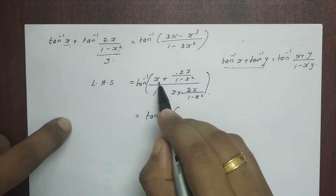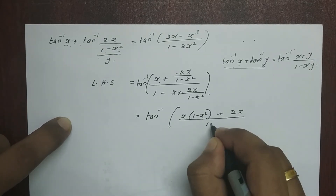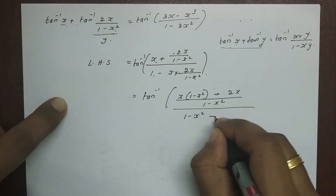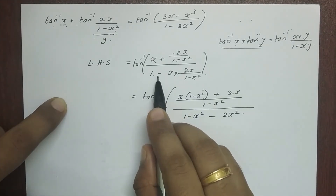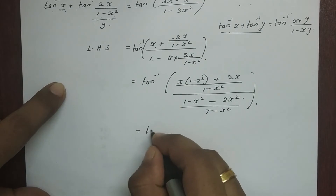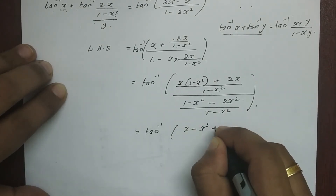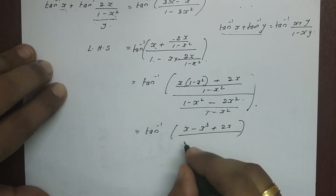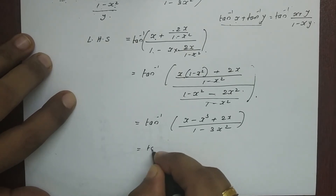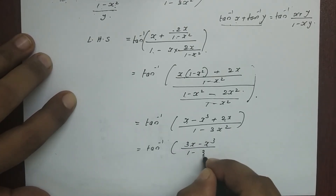The tan inverse equals x into 1 minus x squared plus 2x, all divided by 1 minus x squared, divided by 1 minus x squared minus 2x squared divided by 1 minus x squared, simplifying to 2x divided by 1 minus 3x squared. This gives tan inverse x plus 2x, which is 3x minus x cubed divided by 1 minus 3x squared.